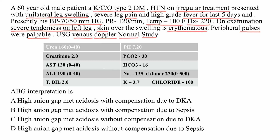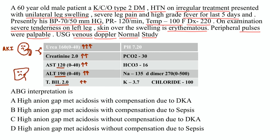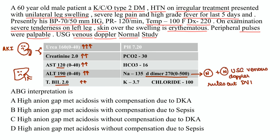Peripheral pulses were palpable and ultrasound venous Doppler was normal. Kidney function tests: urea 160 (elevated), creatinine 2.0 — suggesting acute kidney injury. LFTs: AST and ALT both elevated in the hundreds, bilirubin also elevated — indicating liver abnormalities. D-dimer was normal, and with normal venous ultrasound, DVT is ruled out completely. Now they are asking for ABG interpretation.